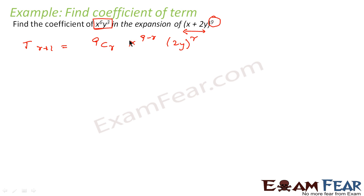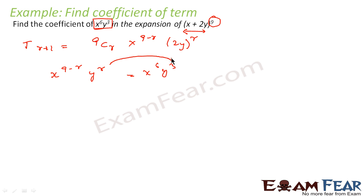We are told the required term contains x^6 · y^3. Comparing x^(9−r) with x^6 gives 9 − r = 6, so r = 3. Comparing y^r with y^3 also gives r = 3. Both conditions confirm r = 3.